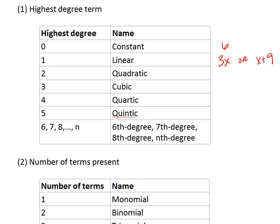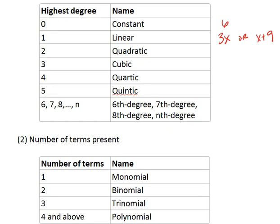Then we can look at a second degree, which is called a quadratic. For example, x squared plus 3x minus 15 is a quadratic polynomial.